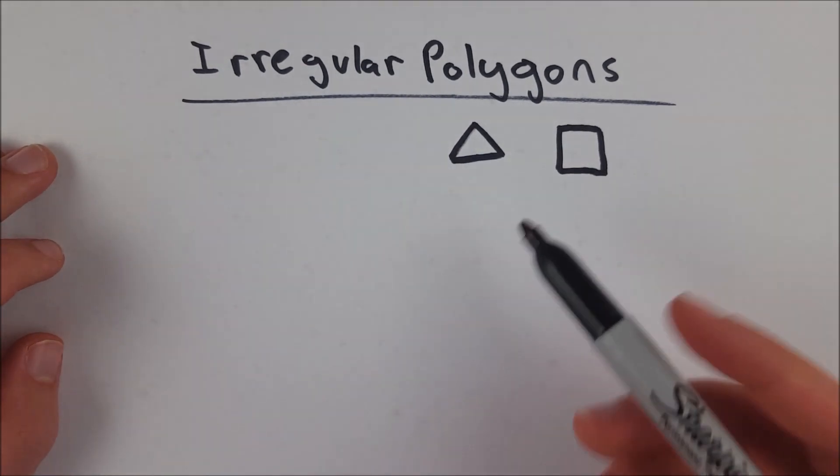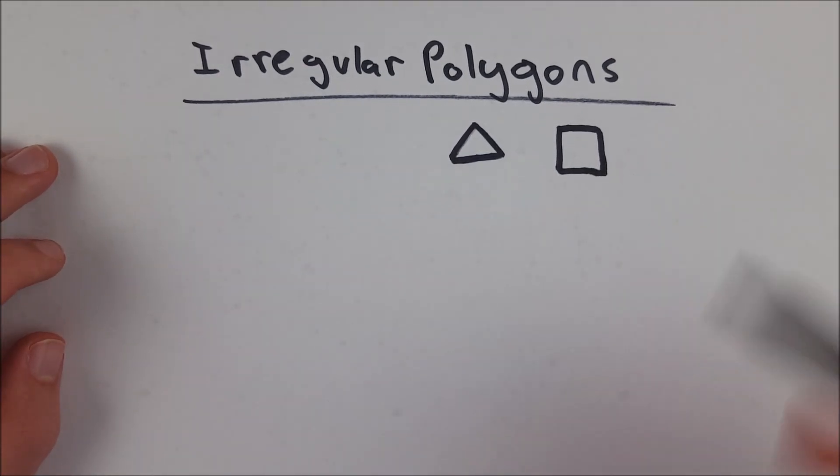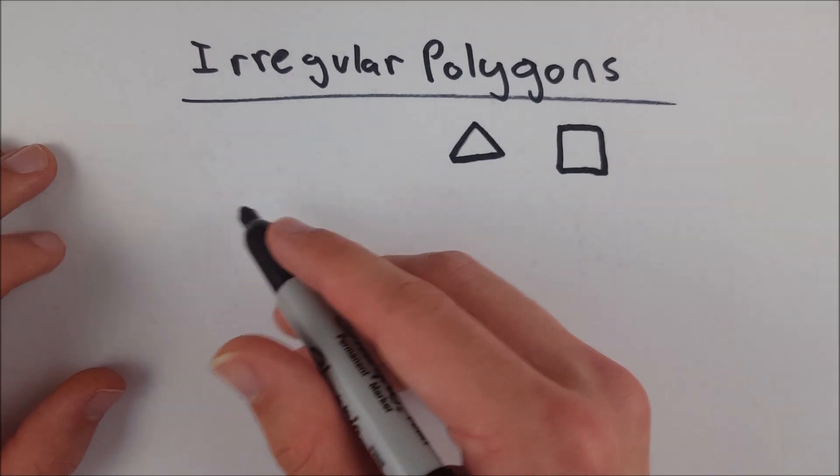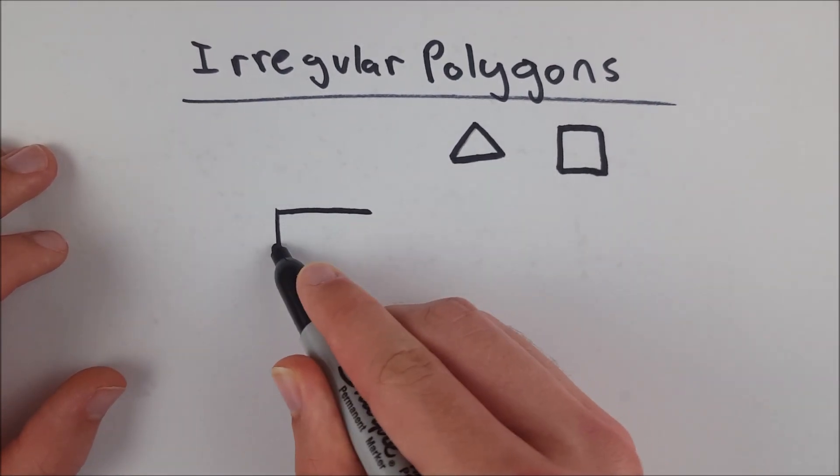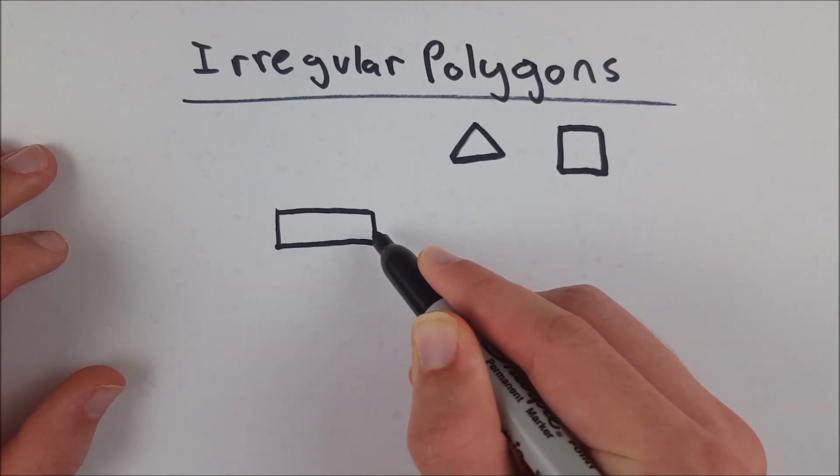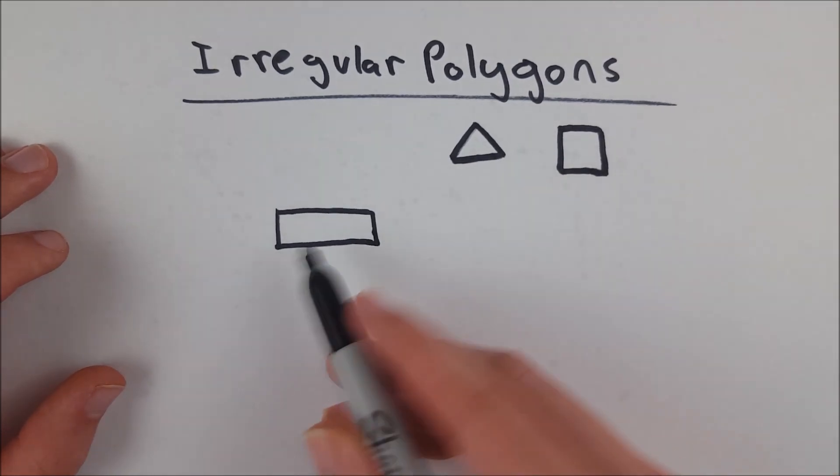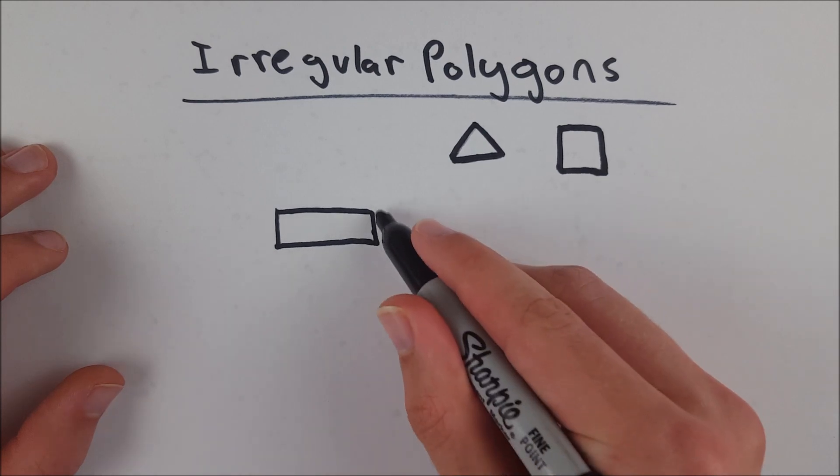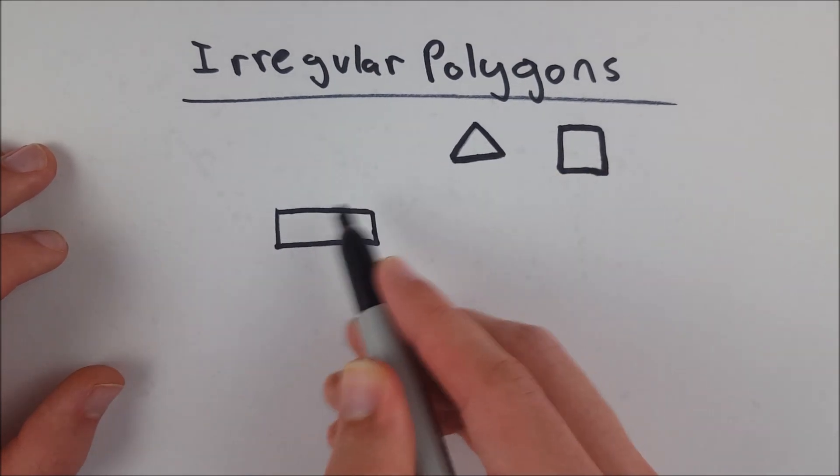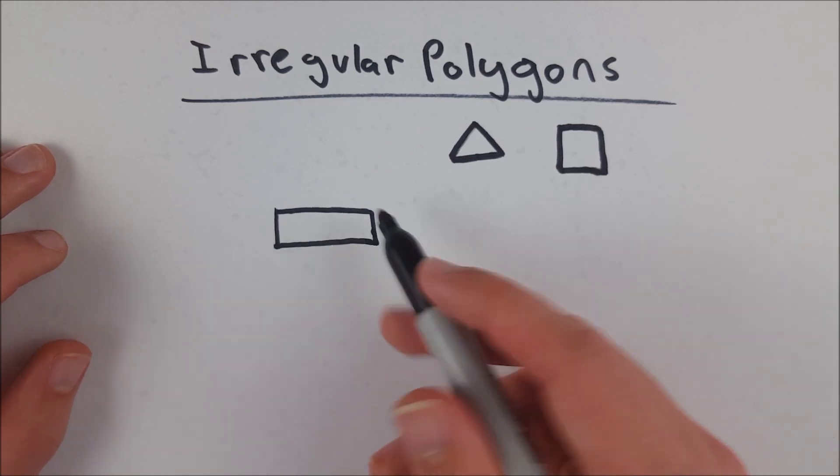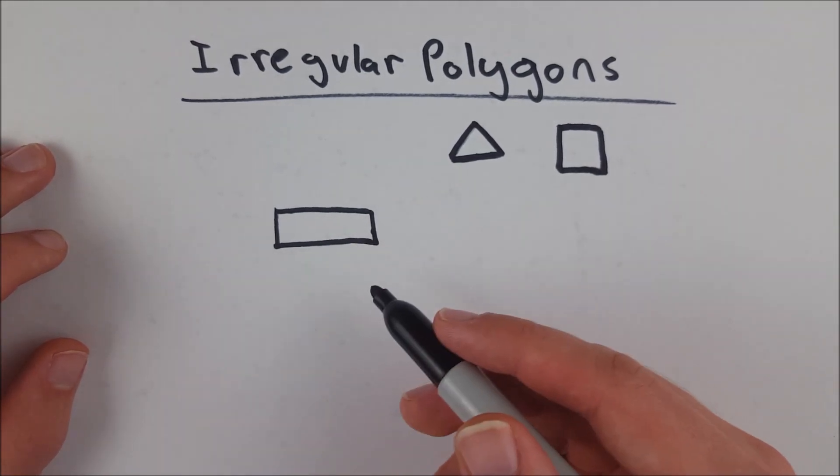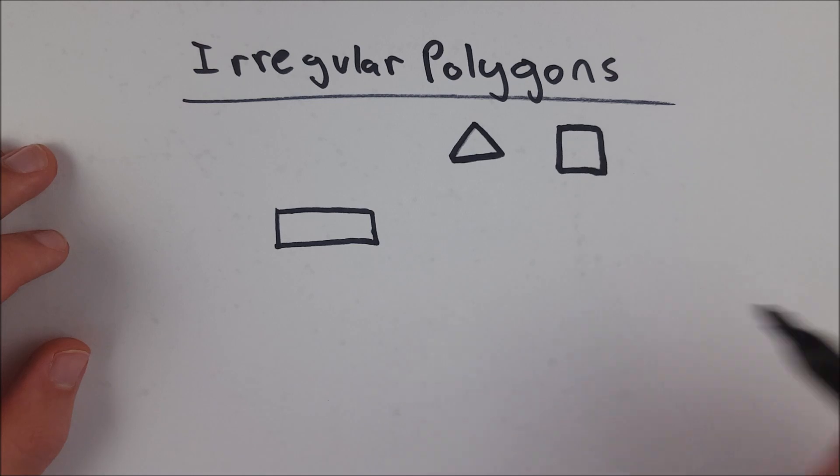So irregular polygons are polygons that don't fit those conditions. For example, any rectangle that isn't a square is an irregular polygon. This is an irregular polygon because not all of its sides are equal. This side is not equal in length to this side, which is not equal in length to this side, and so on. All of the angles are equal, but the sides aren't, and you need both in order for it to be a regular polygon.